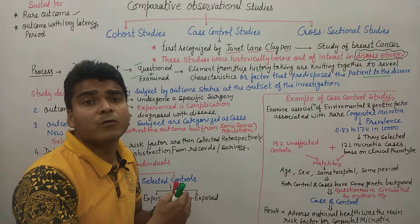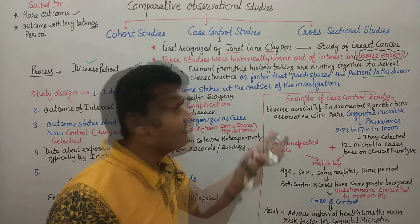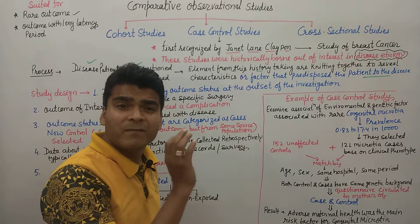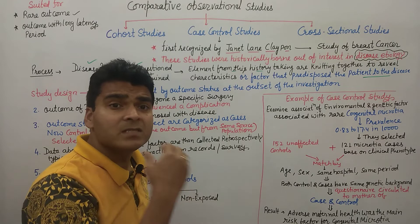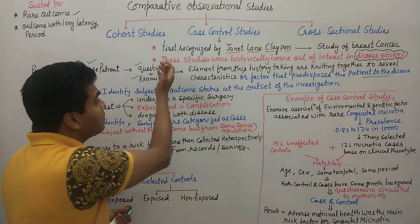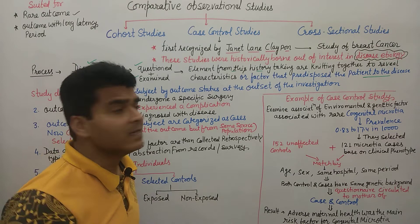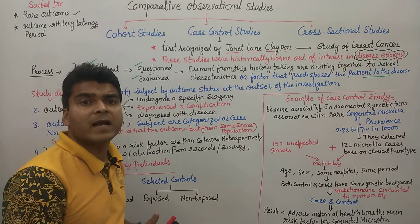For example, Janet Lane Claypon performed a study on breast cancer and found that a low fertility rate is the cause behind breast cancer. Women with low fertility had more breast cancer. Based on these findings, they designed this type of study.